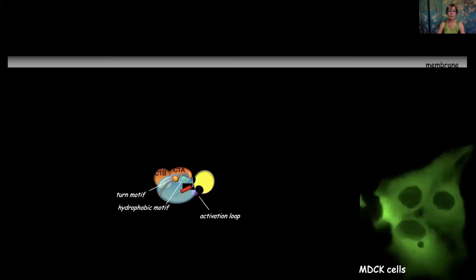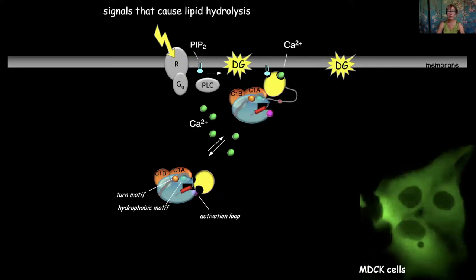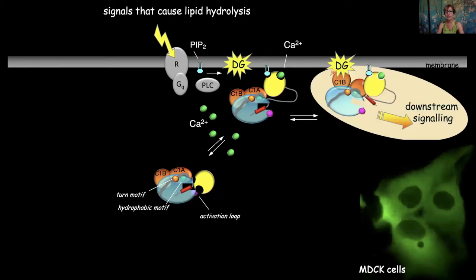When PKC is fully phosphorylated at these priming positions, it adopts this auto-inhibited conformation, which is very stable. In response to second messengers generating calcium, calcium will bind PKC in the cytosol and the enzyme gets retained at the membrane. It binds PIP2 via a PIP2-binding surface, important for retaining it specifically at the plasma membrane. Once at the membrane, it finds its membrane-embedded ligand diacylglycerol, producing the conformational change that expels the pseudosubstrate and allows downstream signaling.